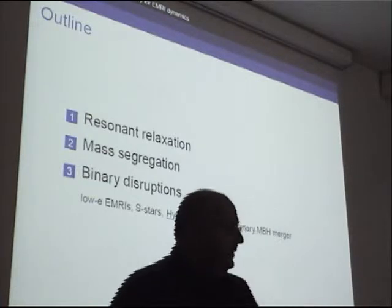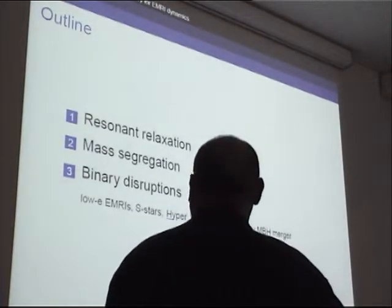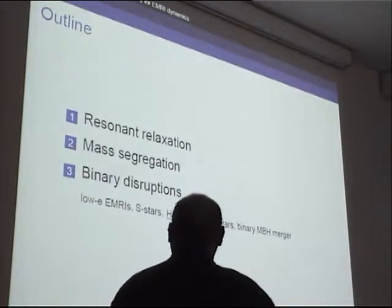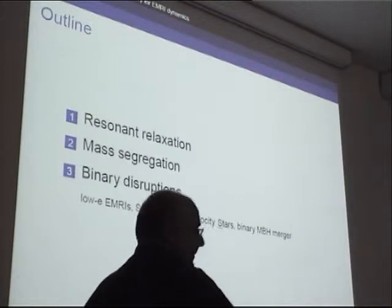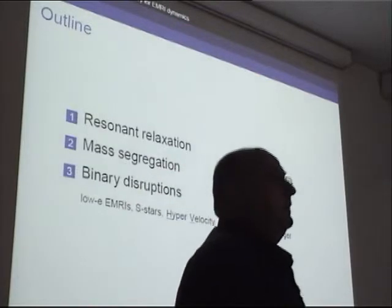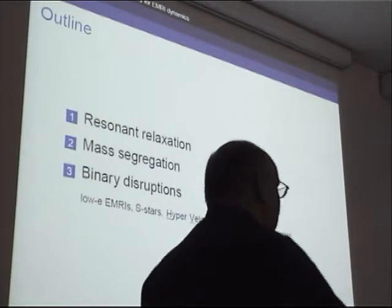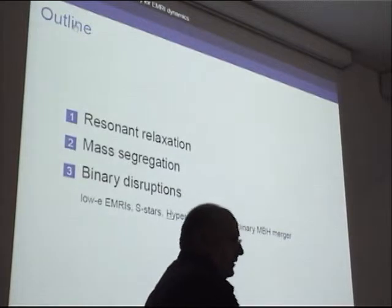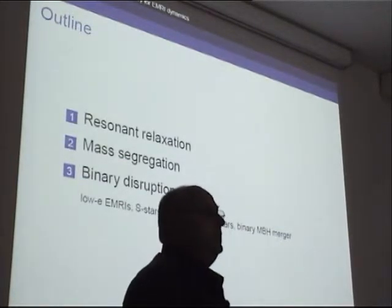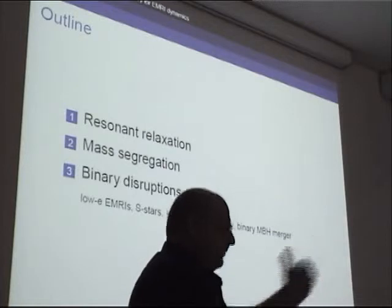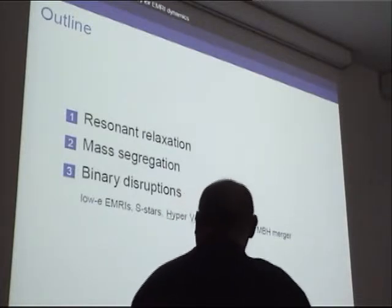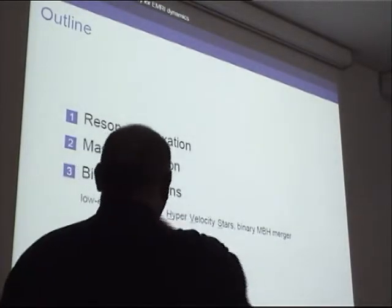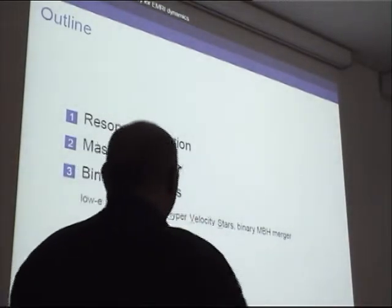The outline of my talk will be: first, to talk about relevance for understanding and calibrating the process of resonant relaxation; next, to talk about the old population in the galactic center, how we find them and what they can or perhaps cannot teach us about mass segregation; and finally, very briefly, I'll talk about a new idea having to do with how to set up conditions leading to binary disruptions.